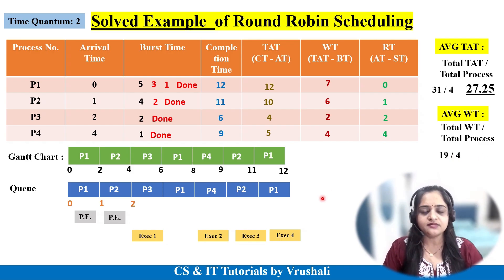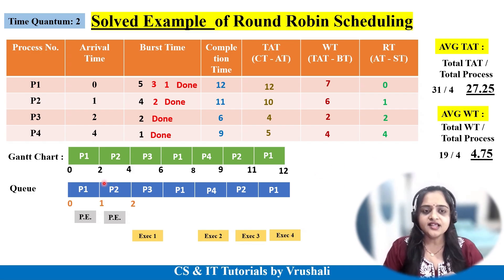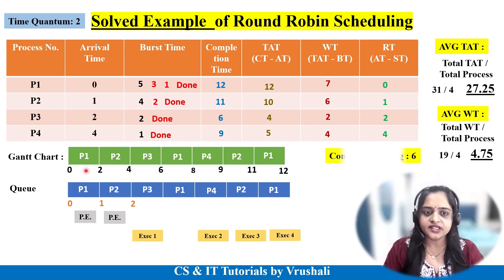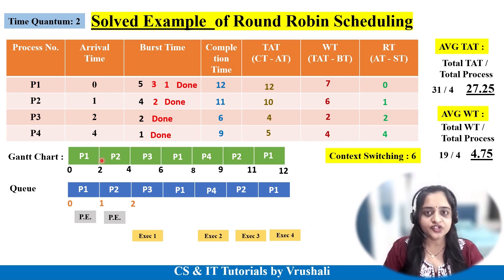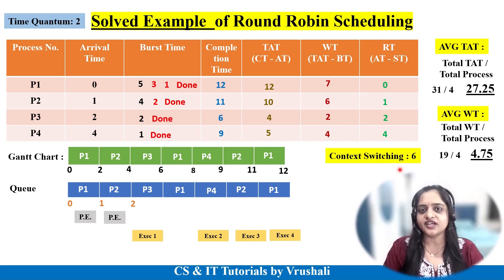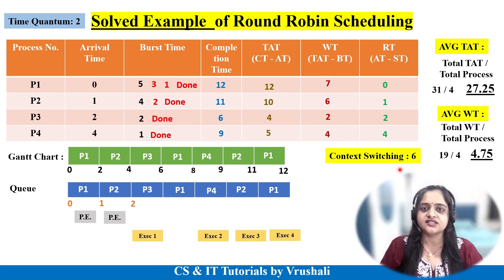In round robin scheduling algorithm, there is one more concept: context switching. The CPU is allocated to each and every process as per the time slot. When CPU switches from P1 to P2, that is called context switching — this is why it is a preemptive scheduling algorithm. Counting the switches: 1, 2, 3, 4, 5, and 6. There are a total of 6 context switches, meaning the CPU switches from one process to another 6 times.